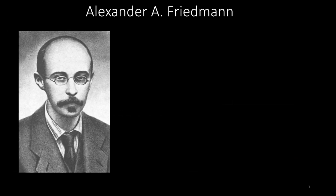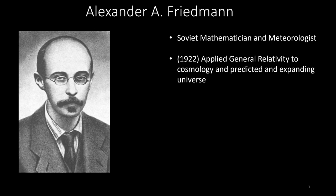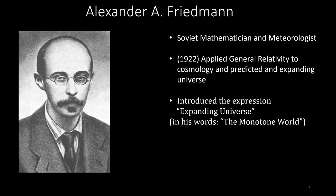Shortly following Einstein's discovery of general relativity, a young Soviet mathematician and meteorologist named Alexander Alexandrovich Friedmann developed the first correct application of general relativity to cosmology. He published this work in 1922, using his mathematics to predict the expanding universe, coining the term he introduced as 'the monotone world,' or the expanding universe.